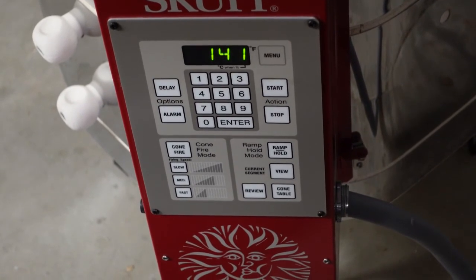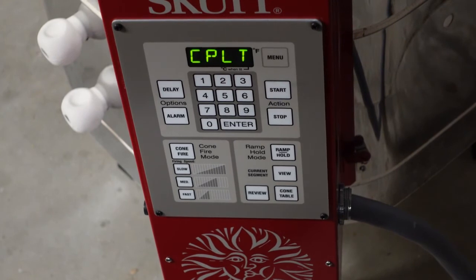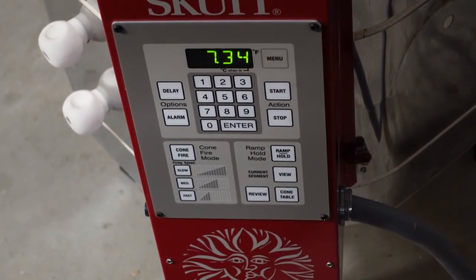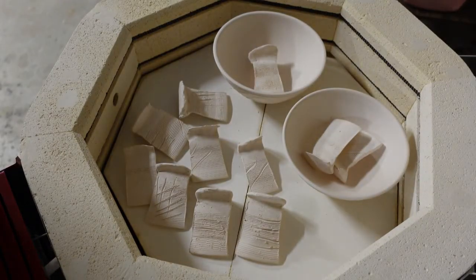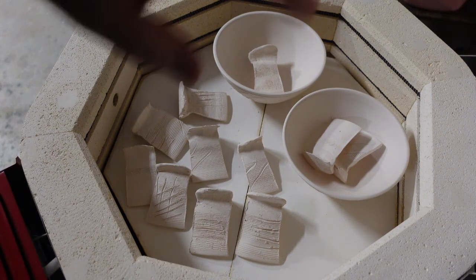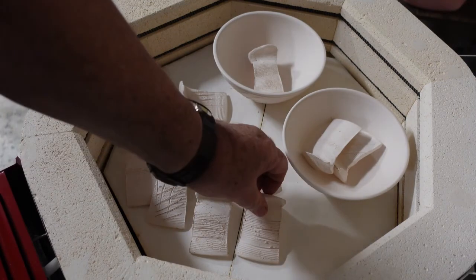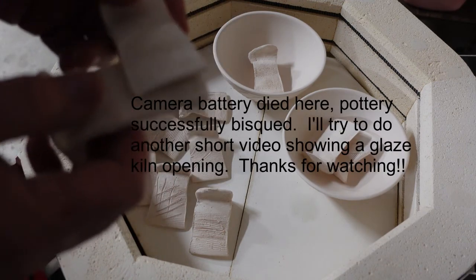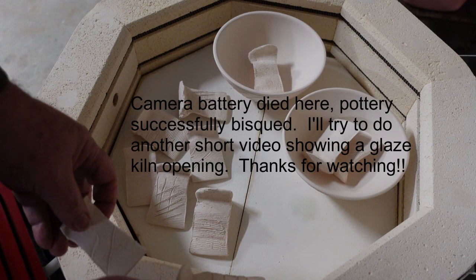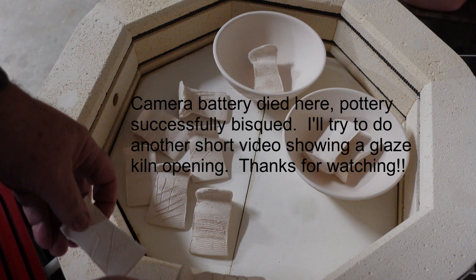We're at a point now where it's safe to open the kiln, and we can do that without burning our fingers or worrying about something blowing up from the severe temperature change. You can see right away that the clay itself has turned white. If I pick a couple of these up and tap them together, you can tell they're hard, turned into like a glass.